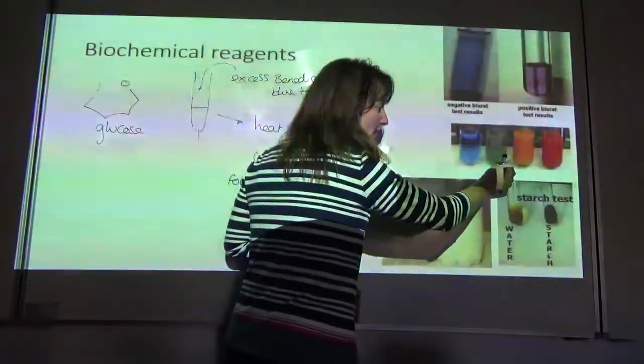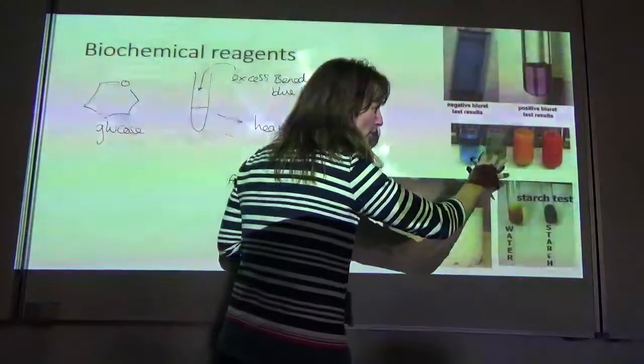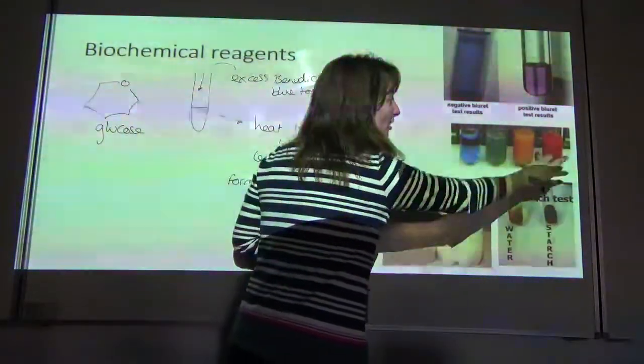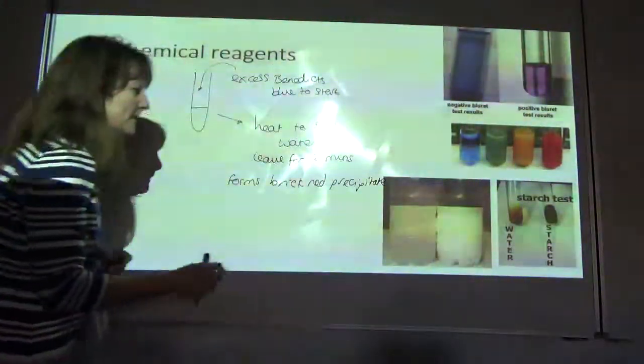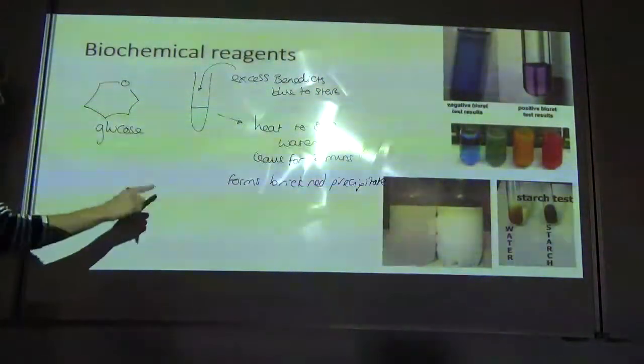Then the more precipitate you get, the more red the solution goes. So if there is a little bit of red precipitate, it mixes with the blue color and you get this greenish color. The more red precipitate there is, it goes through orange and then to red. So that's for reducing sugar.